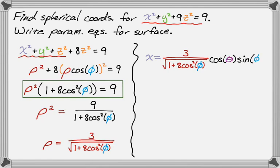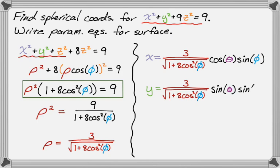The parameters will be θ and φ. And y is almost the same: 3/√(1 + 8cos²(φ)) times sin(θ)sin(φ).